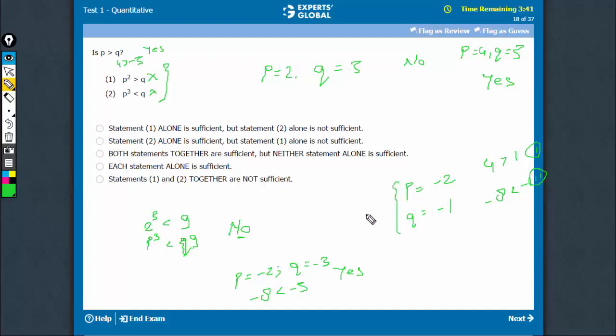So in this case, you're getting no as an answer. You have yes for the pair P = -2, Q = -3, when P is a smaller negative number than Q, and you have no for this case, when P is a bigger negative number than Q. So again, yes and no both are possible. Therefore, combining also doesn't help and E is the right answer.